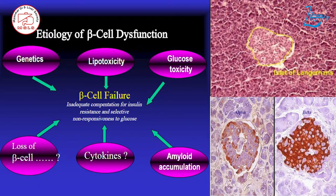The etiology of beta cell dysfunction or insulin resistance will become severe, leading to diabetes mellitus because of beta cell dysfunction. Again, the contributing factors are genetics, lipotoxicity, glucose toxicity, cytokines, loss of beta cells, and amyloid accumulation.